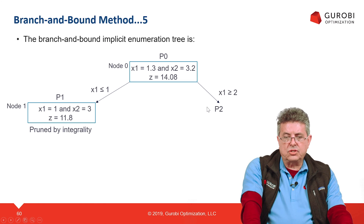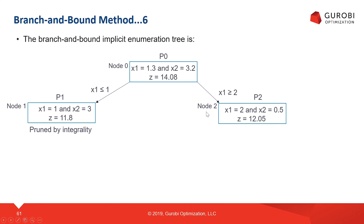Now let's solve P2, generating node 2. We get a new solution: x1 equal to 2 and x2 equal to 0.5 — which is fractional. The optimal objective function value is 12.05. This is less than the root node upper bound of 14.8, so 12.05 gives us a better upper bound to any integral solution we might get. We update the upper bound: the best upper bound is now 12.05 and the best lower bound remains 11.8.